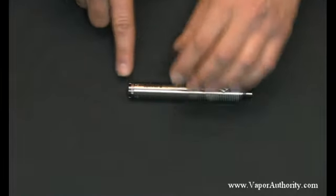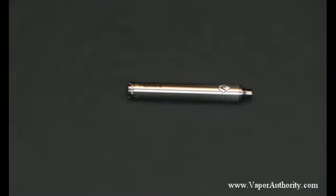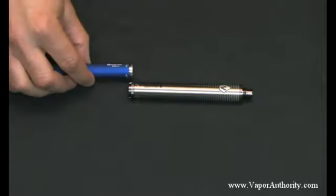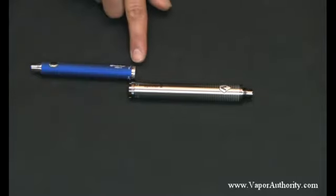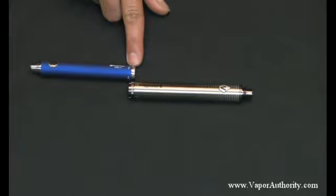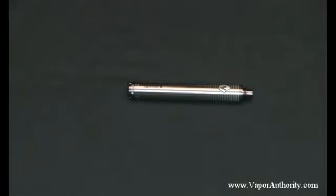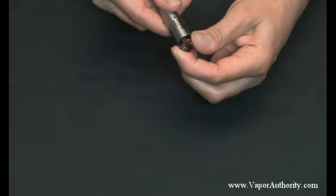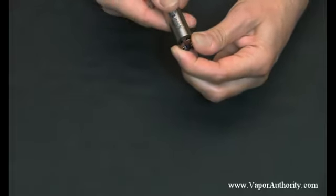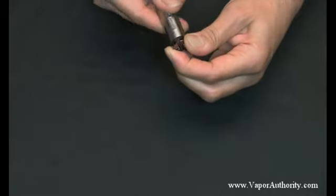Another thing you're going to notice is, on the dial itself, when you compare it to something like the Kanger EVOD variable voltage twist, the knob itself on the bottom is about twice the size as the Kanger EVOD twist. This makes it a lot easier when you want to grab it and adjust the voltage settings.